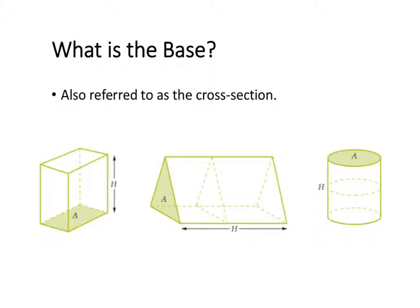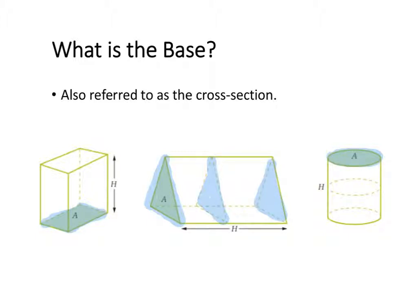For the rectangular prism, the base can be along the bottom of the shape. It can also be any of the sides of the shape, but that is just for a rectangular prism. For a triangular prism, the base is the triangular end of the shape. And for each of those shapes, no matter where we cut it along, we are always going to end up with the same shape — for a triangular prism, we always end up with a triangle on the end, no matter where we cut it.